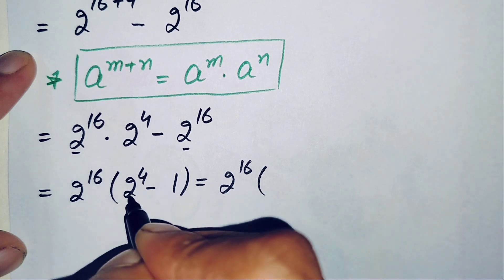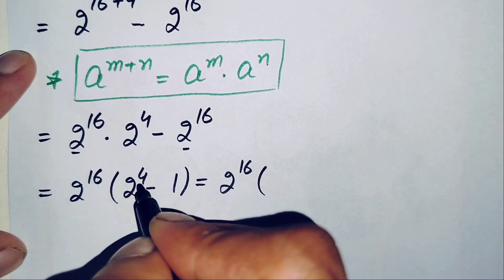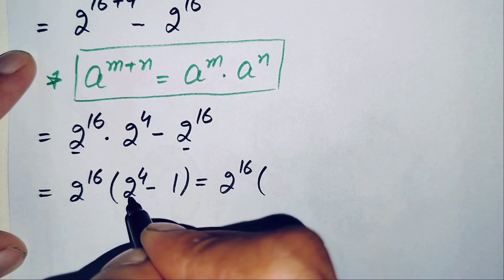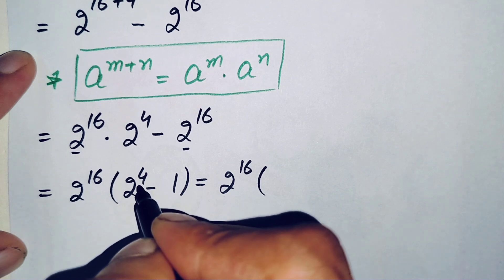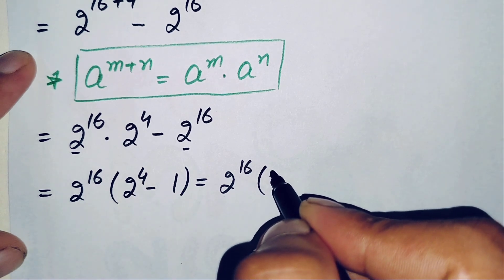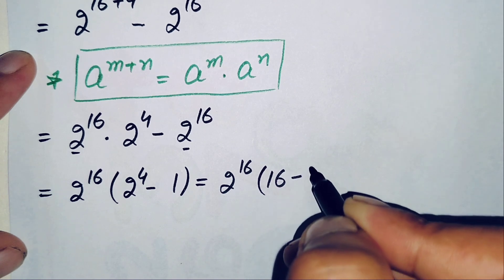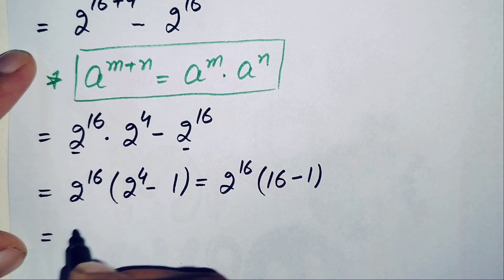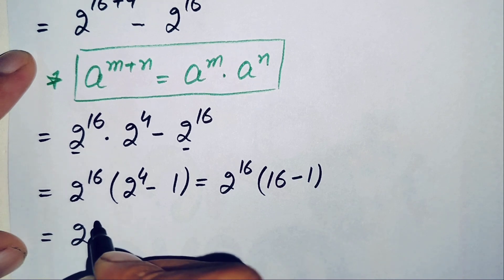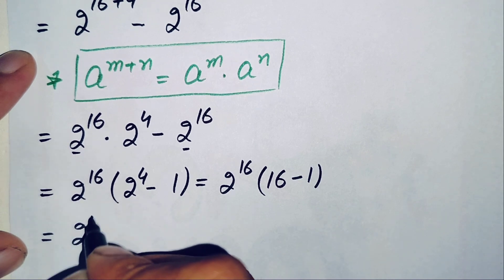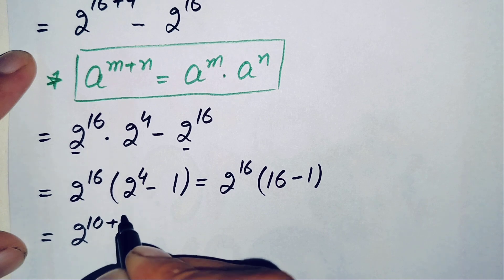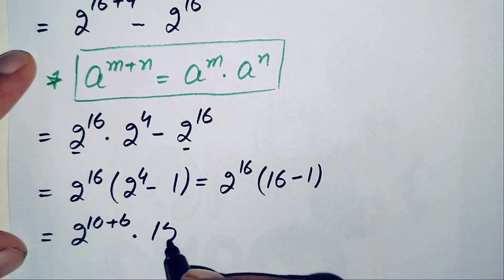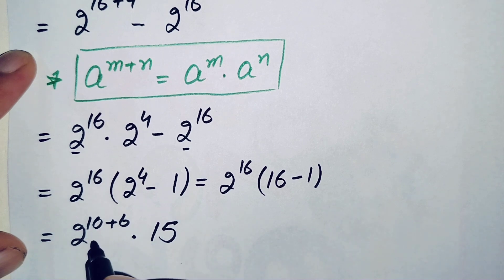Now, 2 raised to power 4 means multiplying 2 four times: 2 times 2 is 4, times 2 is 8, and 8 times 2 is 16. So the value of 2 raised to power 4 is 16. Therefore the expression becomes 2 raised to power 16 times (16 minus 1), and 16 minus 1 is 15. So we have 2 raised to power 16 times 15, and we can write 16 as 10 plus 6.